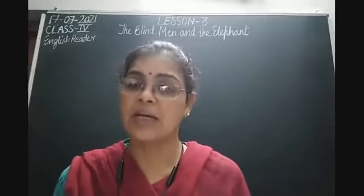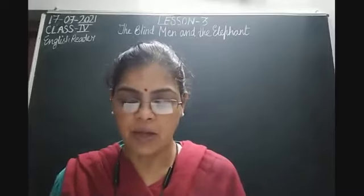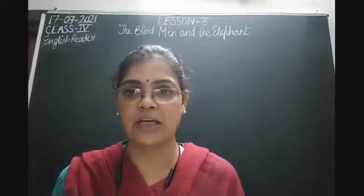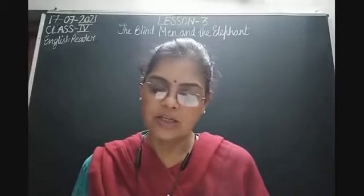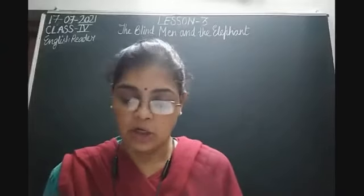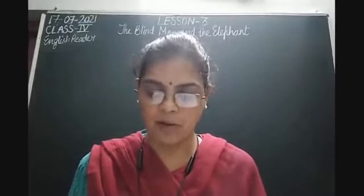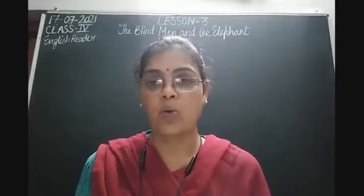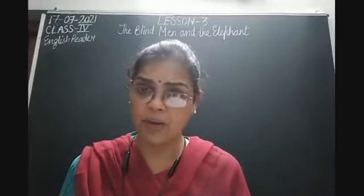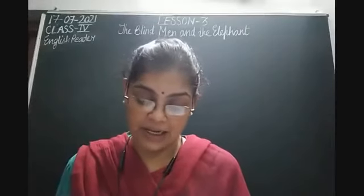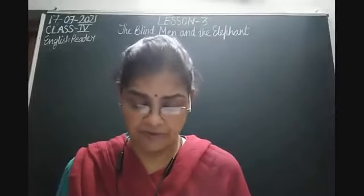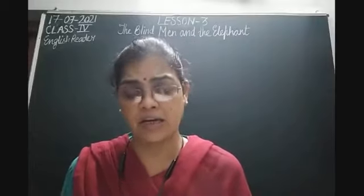Question number 4: Did the four friends describe the elephant in the same manner? Answer: No, the four friends did not describe the elephant in the same manner. Question number 5: What did the wise man tell the four friends? The wise man told them that they should have pooled their information instead of arguing over who was right. Question number 6: What did the four friends realize finally? The four friends realized their mistake and did as advised by the wise man. Thus, they were finally able to get a clear picture of the animal in their mind.